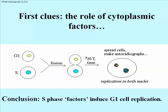You would conclude from this experiment that there must be some factor — some regulatory molecule, assume it's a protein and you would be correct — some S-phase protein factor responsible for causing or inducing the nucleus of the G1 cell to start replicating its DNA prematurely, before it has reached the appropriate time to do so.